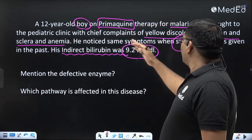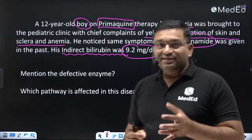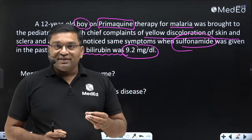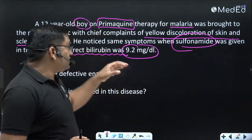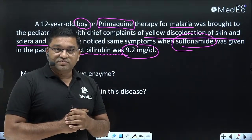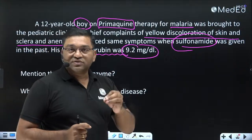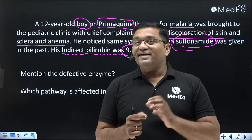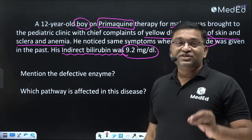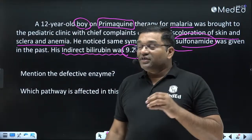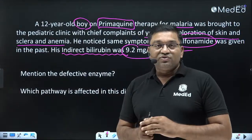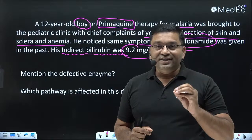Oxidant drugs include primaquine, sulfonamide, acetanilide, dapsone (used in treatment of leprosy), and nitrofurantoin. When exposed to these oxidant drugs, symptoms develop because of generation of reactive oxygen species or free radicals in patients with G6PD deficiency. Symptoms appear in the form of jaundice and anemia — this is known as drug-induced hemolytic anemia.